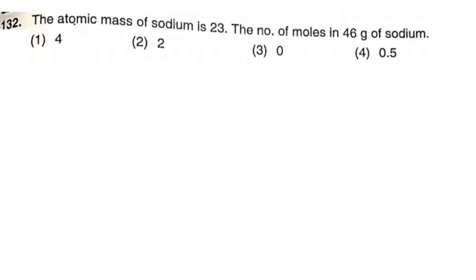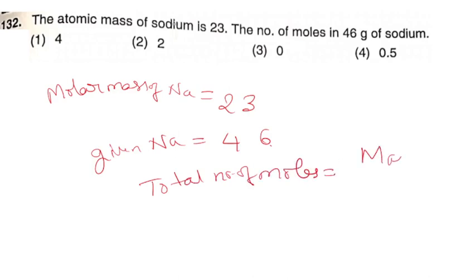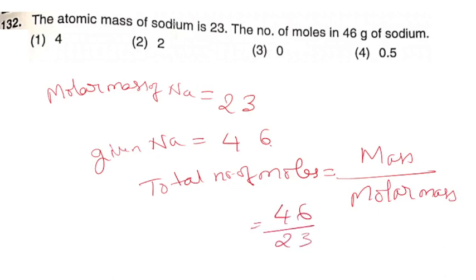Next question: The atomic mass of sodium is 23. Find the number of moles in 46 grams of sodium. Number of moles equals mass divided by molar mass: 46 divided by 23 equals 2. The correct answer is option number 2.